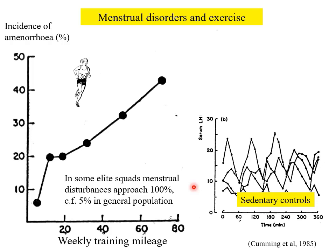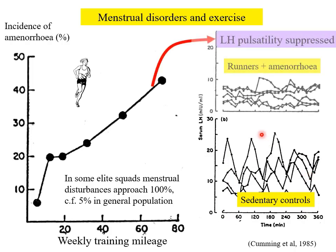Looking at what's driving the ovaries: in control women who do a small amount of exercise, there are lots of LH pulses. If you look at the women showing menstrual irregularities — the runners with amenorrhea — the LH pulsatility is suppressed. LH levels are far less pulsatile than in the normal controls, who are showing normal menstrual cycles.